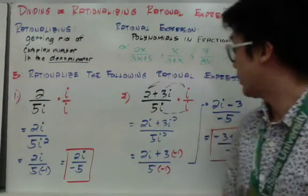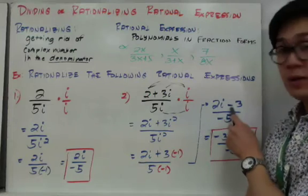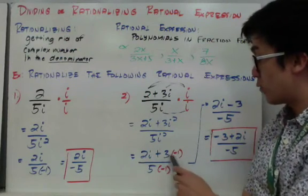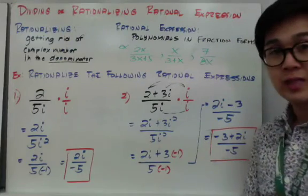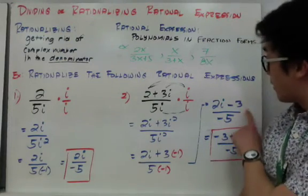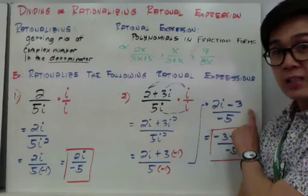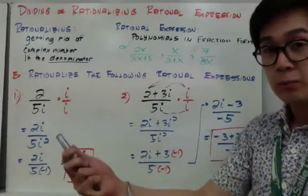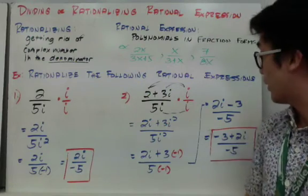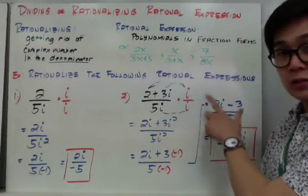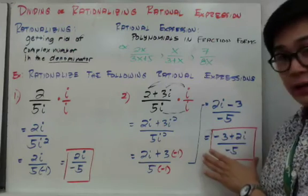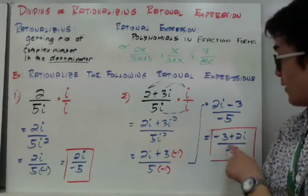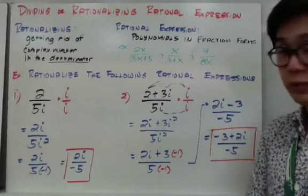To further simplify our expression, we have 2i minus 3 all over negative 5, from multiplying 3 and negative 1, and 5 times negative 1. This rational expression is not in standard form yet because the standard form of a complex number is real part then imaginary part. So we switch to get negative 3 plus 2i all over negative 5.